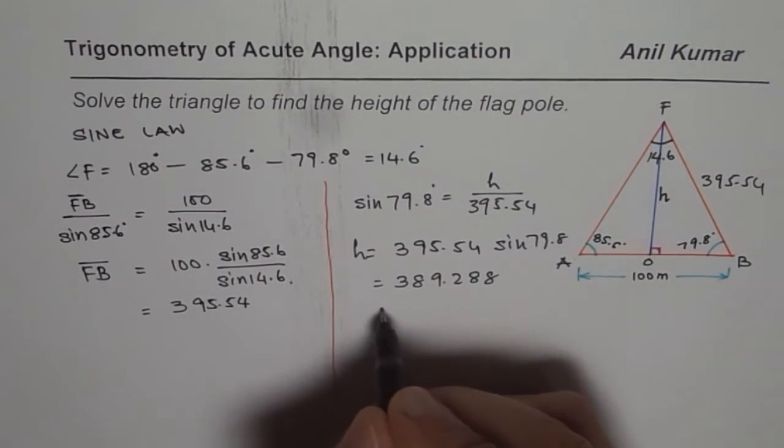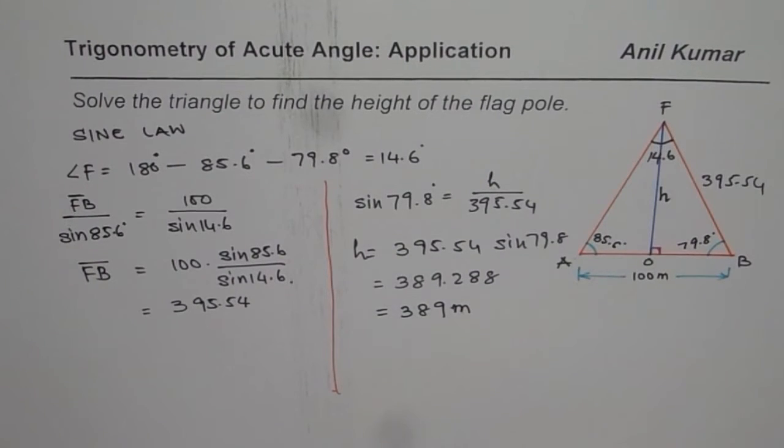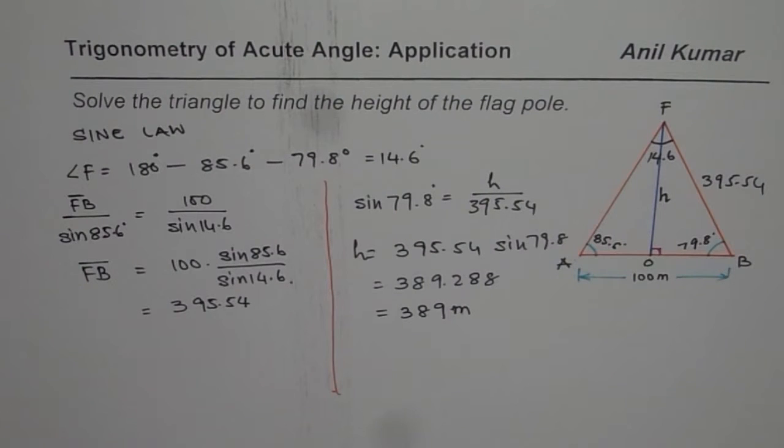We can round this answer to the nearest meter and write this as 389 meters. So that is the height of this particular flagpole. That is how you can actually solve such questions. I hope that helps. Thank you and all the best.